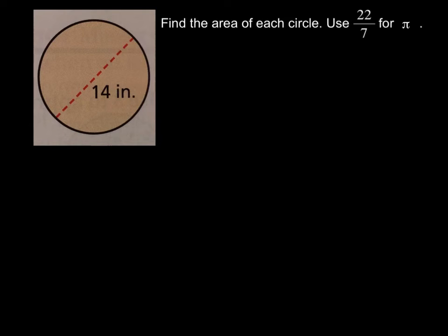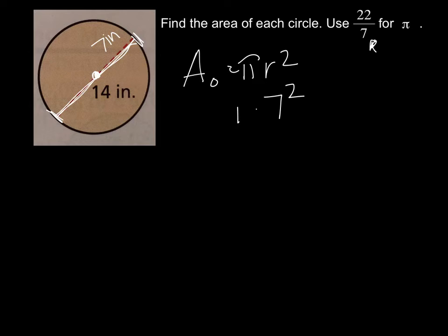So now this one they're asking us to be exact, and they're asking us to use this 22 sevenths for pi. That is the closest fraction that they found to equal pi. You will often see this 22 sevenths used for pi. So let's start again by writing our formula. Area of a circle equals pi r squared. I see they're trying to trick us again and give us the diameter. So if I know the diameter is 14, I'd know half of 14 is 7 inches.